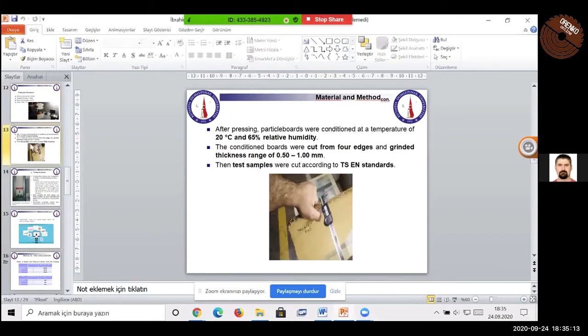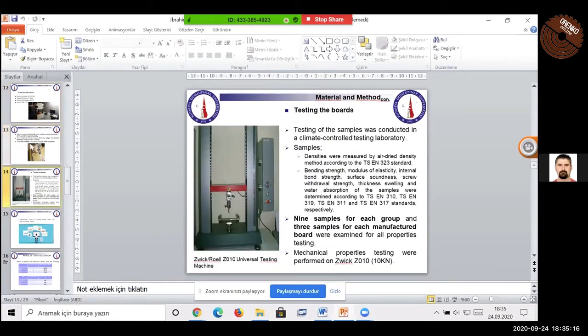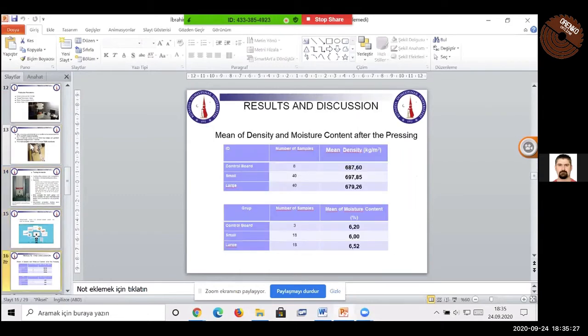I think I can pass from here. Nine samples for each group and three samples for each manufactured board were examined for all properties testing. Mean of the density and moisture contents after pressing. You can see from here, the density, they are near each other. I think we produce boards and this is the moisture contents. They are also close to each other.